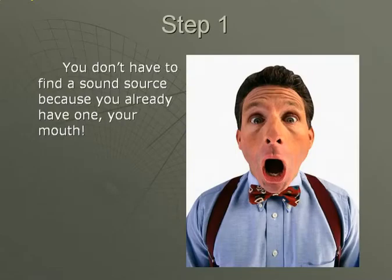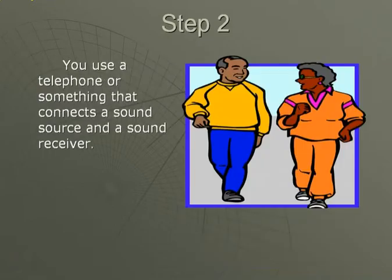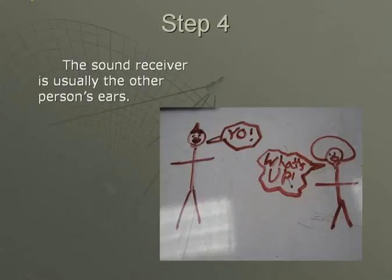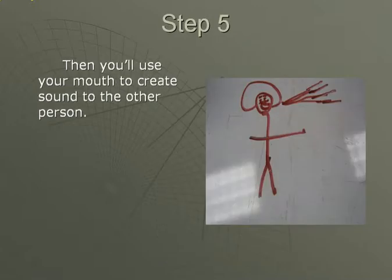You don't have to find a sound source because you already have one in your mouth. Use a telephone or something that connects a sound source and a sound receiver. You'll reach the sound receiver, or ear. The sound receiver is usually the other person's ears. Then you'll use your mouth to create sound to the other person.